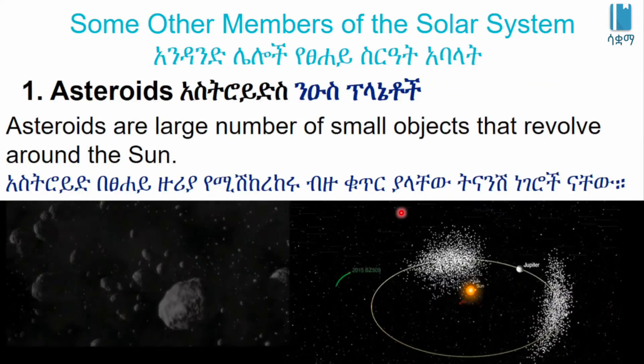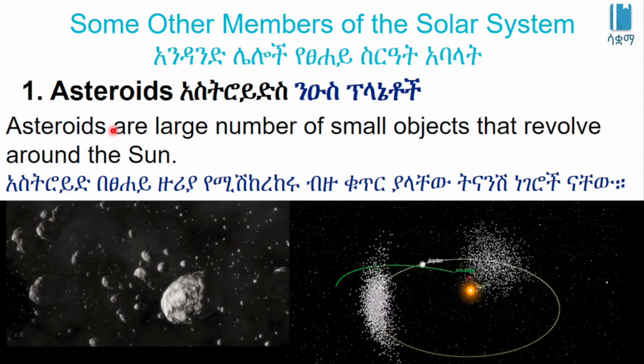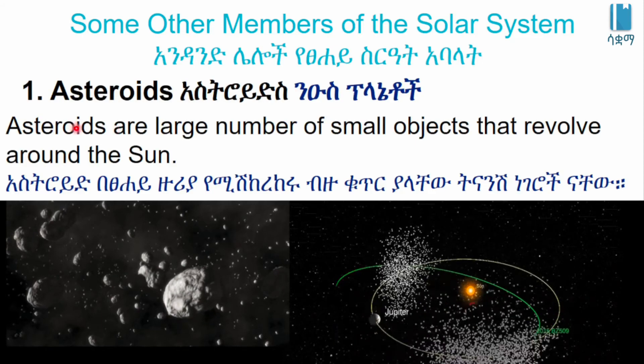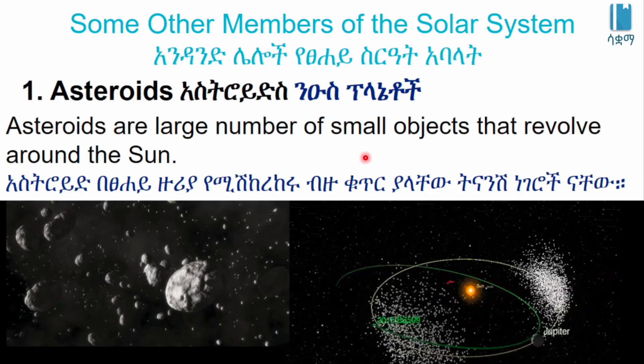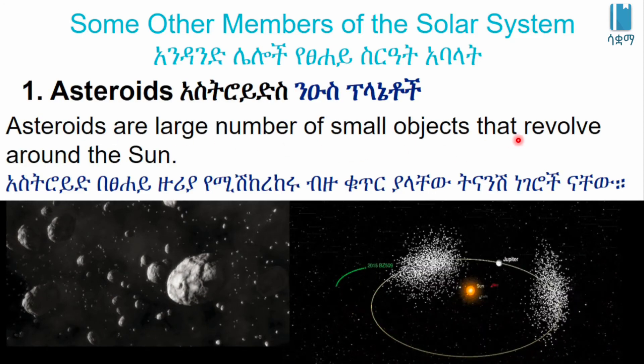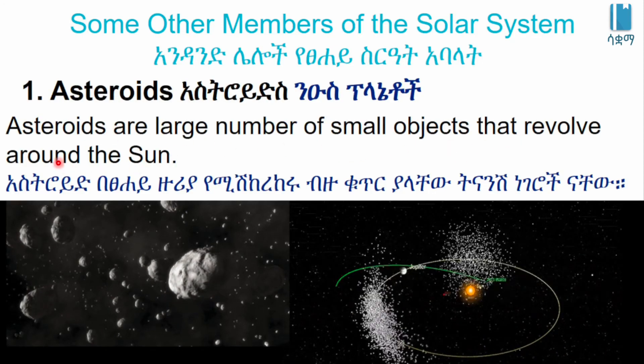Asteroids are a large number of small objects that revolve around the sun.